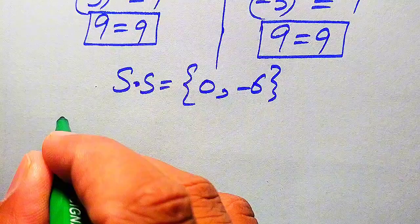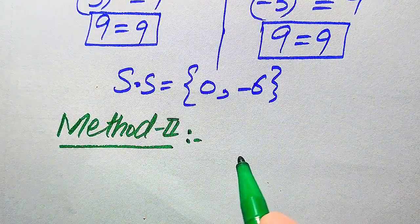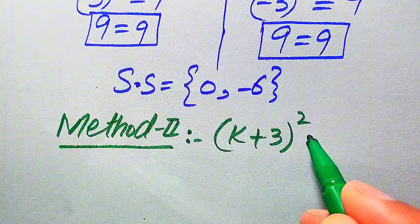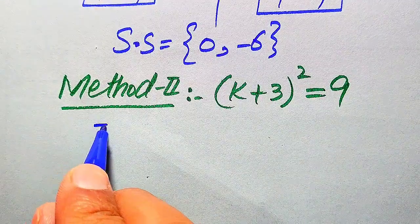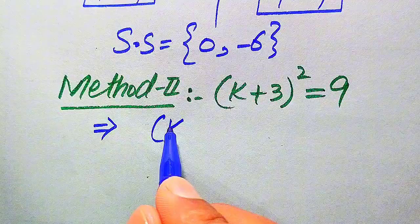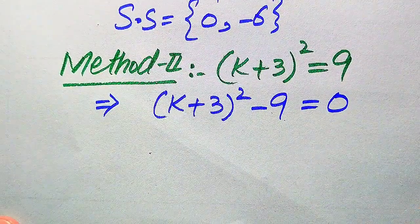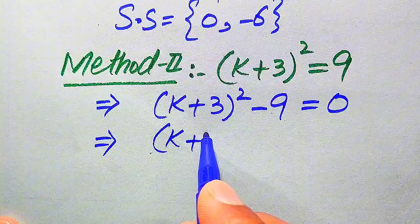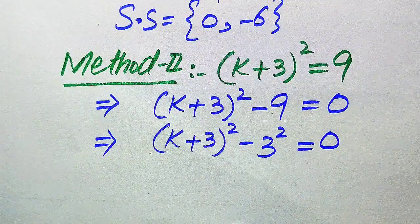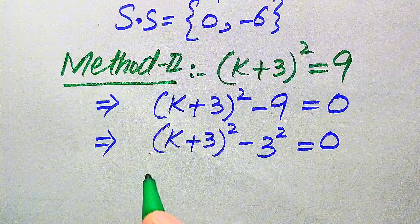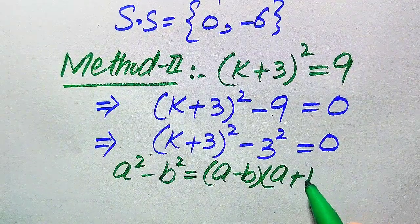Now we solve this problem using the second method. The given equation is (k + 3)² = 9. In this method we first move the term from the right-hand side to the left-hand side, giving us (k + 3)² - 9 = 0. We rewrite this as (k + 3)² - 3² = 0, and use the algebraic identity a² - b² = (a - b)(a + b).